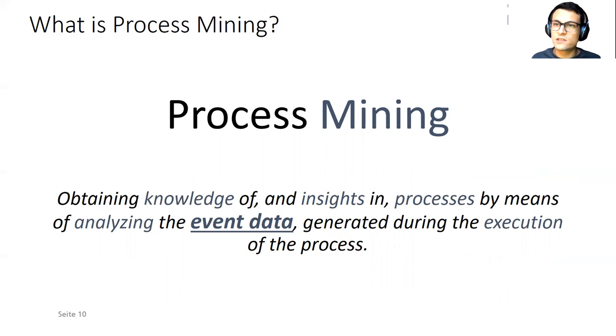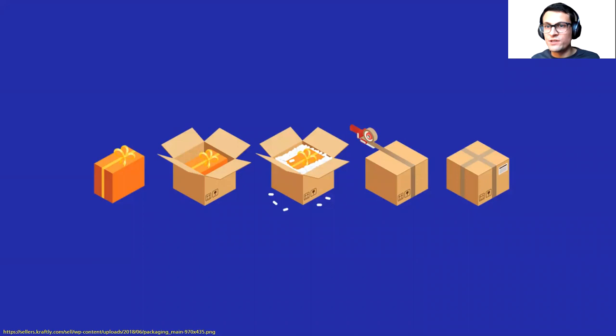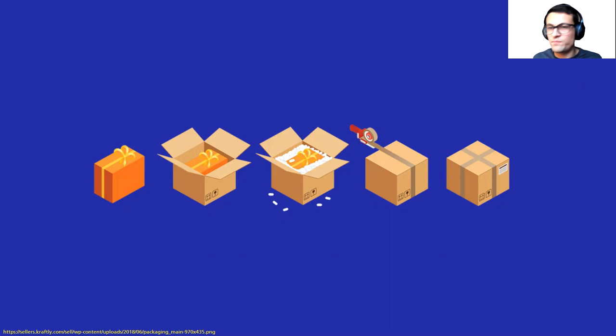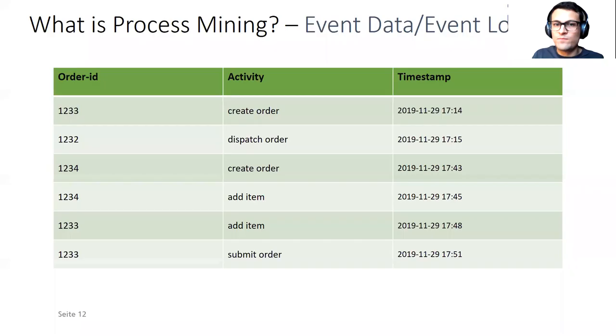Let's take a quick look at this event data. How does it look? Let's assume we're in the business of sending Christmas gifts to clients who can order them in a web shop, and let's look at the process we execute to send all these gifts to our customers — starting with a look at our warehouse.